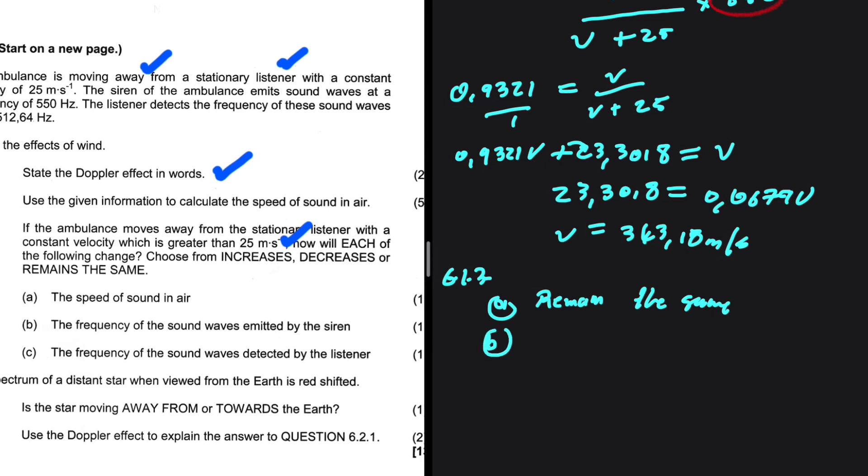And then B, the frequency of the sound waves emitted by the siren. If you're emitting sound waves with a frequency of 500, that is not dependent on how fast you're moving. The frequency that you're emitting is going to be 500. Whether you're stationary, whether you're moving towards, whether you're moving away. So again, we have remained the same.